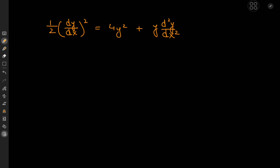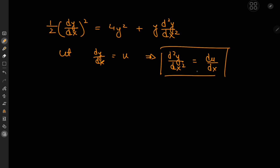The first thing we should do is make a simplifying substitution, letting dy/dx equal u. This further implies that the second derivative equals du/dx, but this introduces a problem. If we make use of these structures, the differential equation is now in three variables: y, x, and u — and we certainly don't want that. But we can fix that by using the chain rule.